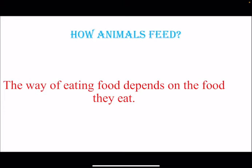How do animals feed? The way of eating food depends on the food they eat. Like when you eat Chinese food, you eat it in a different style compared to Indian food. The same way applies to animals — what they eat determines how they will eat it.